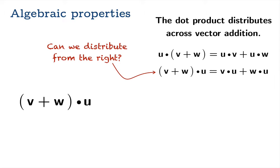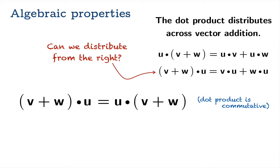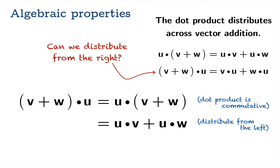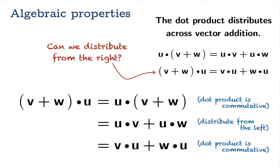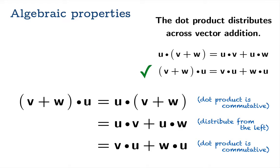Starting with (v plus w) dot u, we've already proved the dot product is commutative, so we rewrite it as u dot (v plus w). Now we can apply the distribution property from the left — we already proved that. Then individually, u dot v equals v dot u and u dot w equals w dot u by commutativity. So it is true that you can distribute from the right side as well.